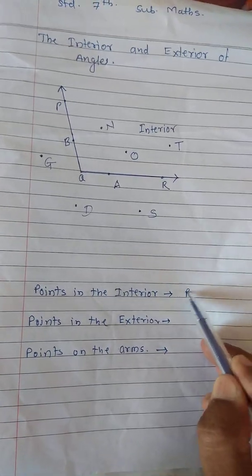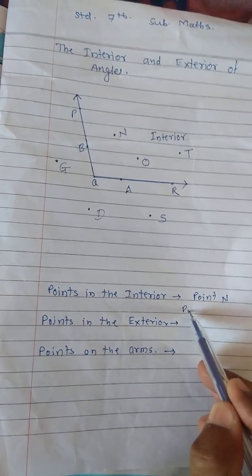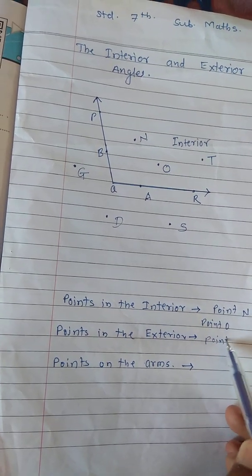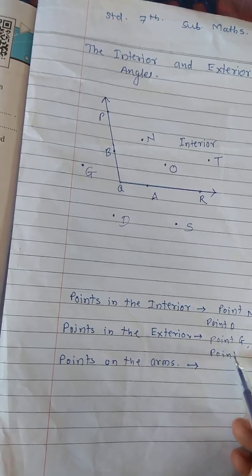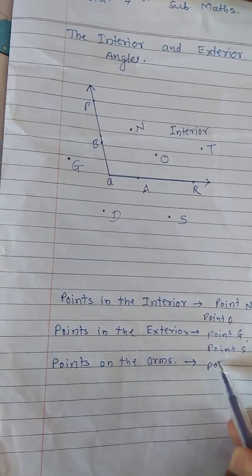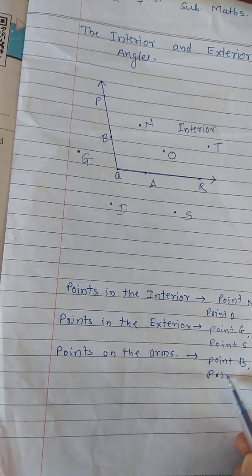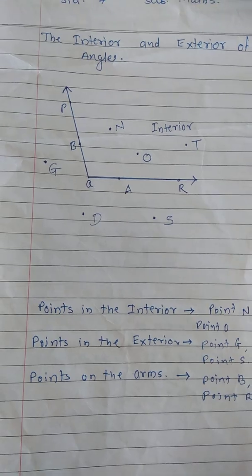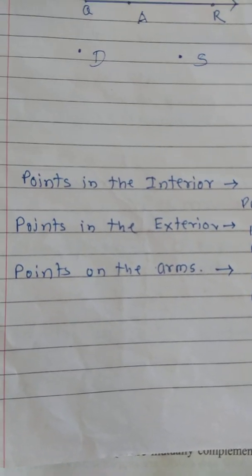Here is the answer: points in the interior are point N and point O. Points in the exterior are point G, point S, and point D. Points on the arms of that angle are point B and point R. This is your answer. Now you have to draw the figure and identify the points in the interior, the exterior, and on the arms.